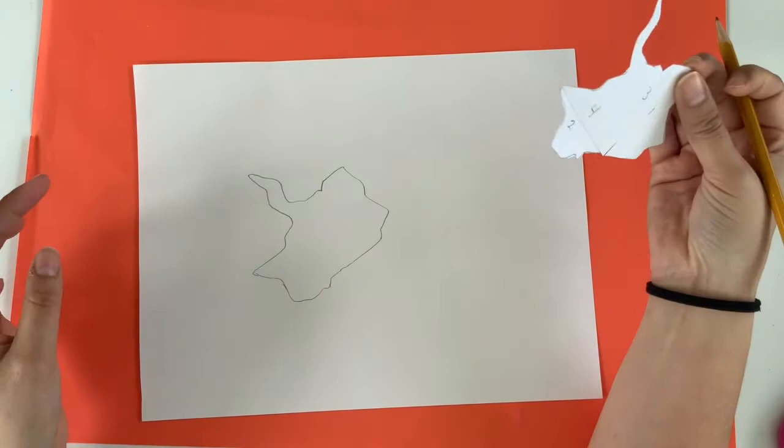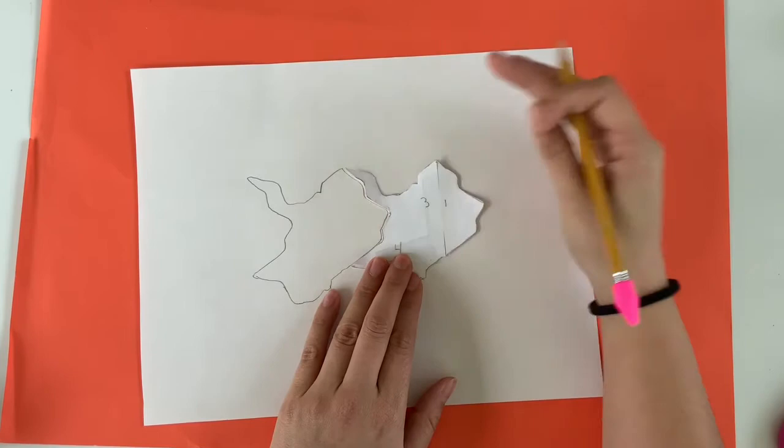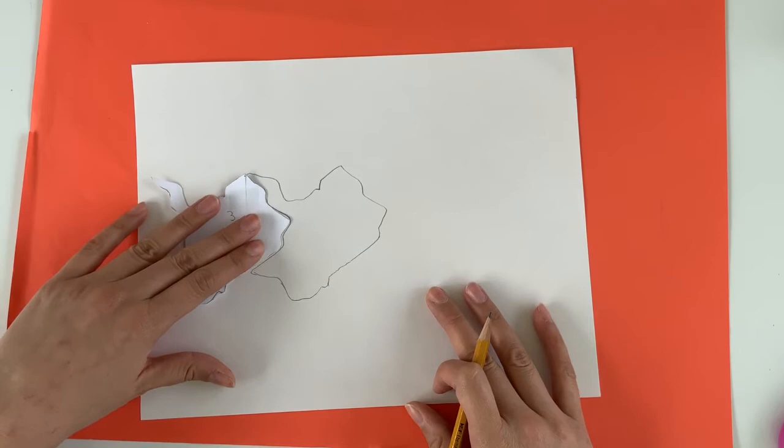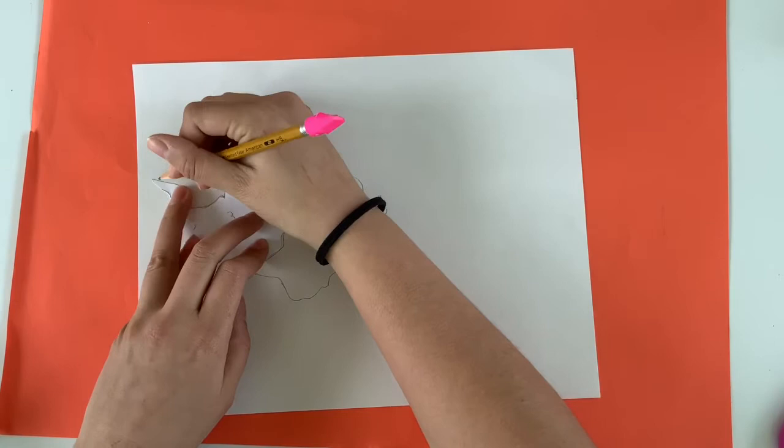All right, done my first shape. Now because of the way we made it, it should fit into itself perfectly. The whole idea of a tessellation is having a shape that fits together repeatedly with no gaps or spaces. As long as I don't flip my stencil over or tilt it, it should fit on the top, the bottom, and both sides.